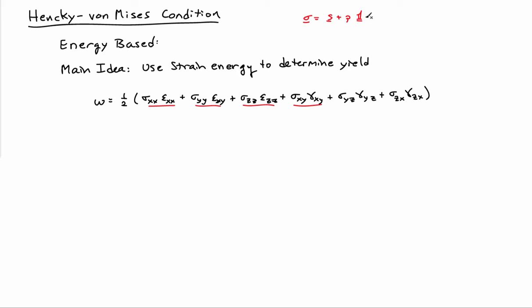I can substitute for every one of these sigmas in terms of the deviatoric stress components and the pressure component. And likewise, I can determine expressions for the strains in terms of the stresses using Hooke's law. So if I go ahead and go through that exercise, it's a bit of algebra, but it's certainly doable, I can write down the strain energy in terms of two parts, one that only depends on the components of the deviatoric stresses and one that only depends on the pressure of the system.